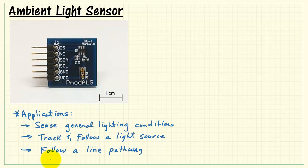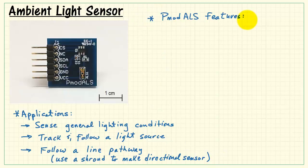Especially if you need to improve the directionality, you might consider using a shroud or little cylinder that you can use to make the sensor more directional. Quick review of the PMOD ALS features. As I mentioned earlier, it's an 8-bit resolution analog to digital converter. Zero tells you that the sensor is dark.